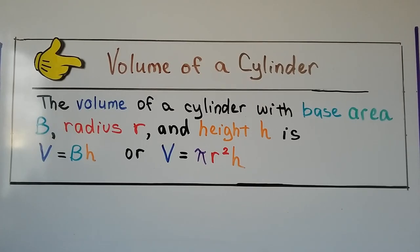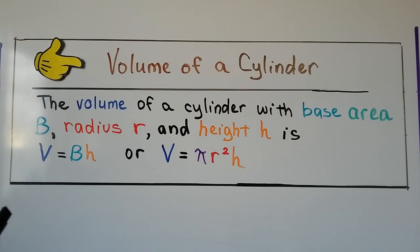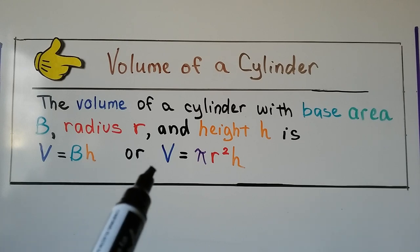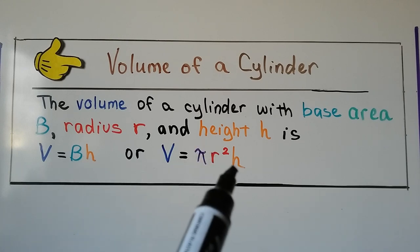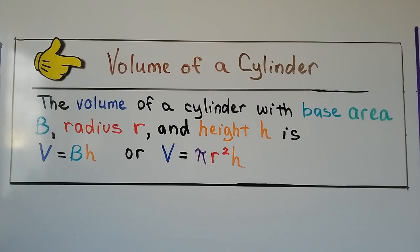For your notes, the volume of a cylinder with base area B, radius r, and height h is V equals B times h. Volume equals the base times the height. We can also write it as pi r squared times h, where pi r squared represents the base.